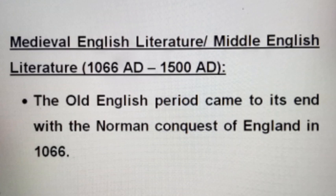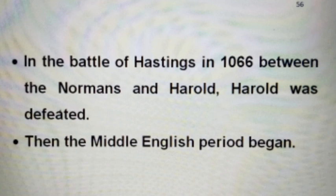The Old English Period came to its end with the Norman Conquest of England in 1066. In the Battle of Hastings in 1066, between the Normans and Harold, Harold was defeated.